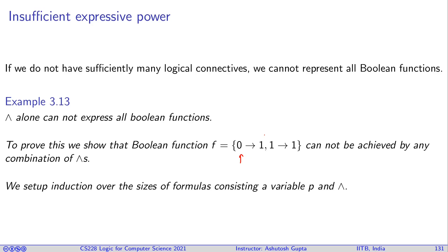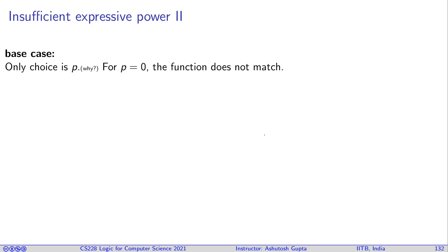Since the function f only has a single argument, you cannot have two variables in this function. The only choice is p. In the base case, there's no true symbols, no false symbols—only one atomic formula is p, and you can see that p for zero does not match the function. So you cannot represent it with a single variable.